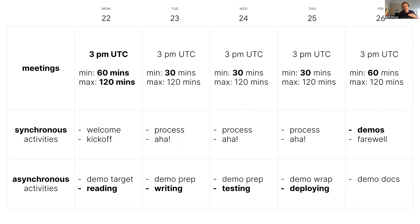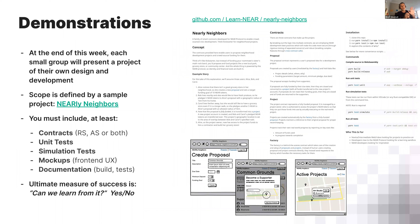The goal on a daily basis: today there's work to do — you should be reading contracts. If it's very late for you, start early tomorrow. You should be reading contracts, then writing contracts tomorrow, testing contracts, then deploying, and finally demonstrations on Friday. Several people were asking what we're going to learn and submit this week — this is the answer. At the end of the week, each small group is going to present a project of their own design and development.